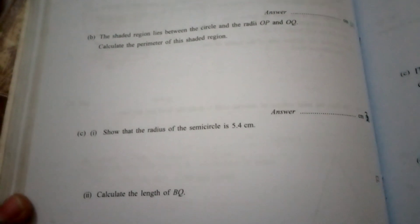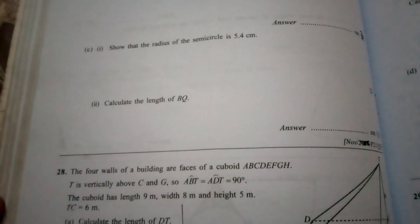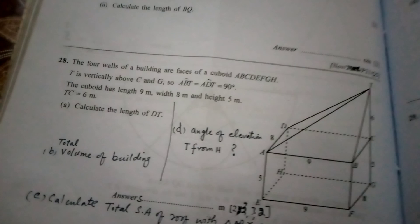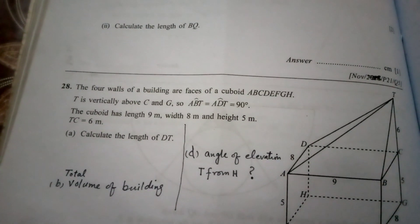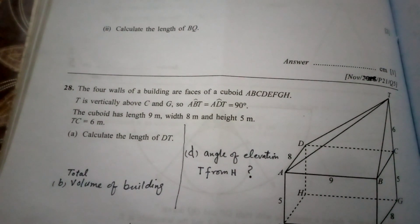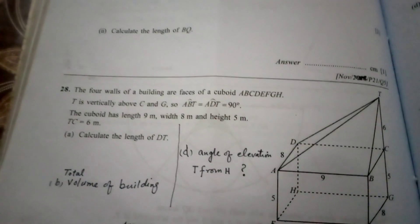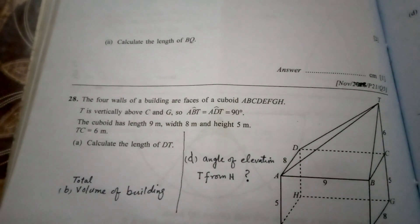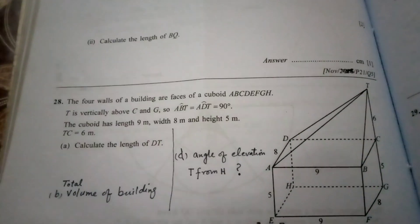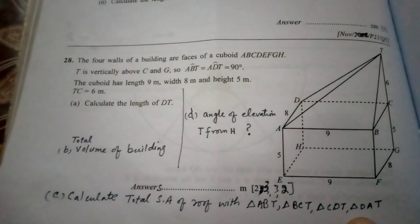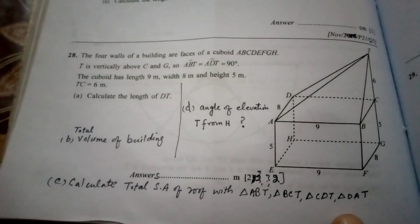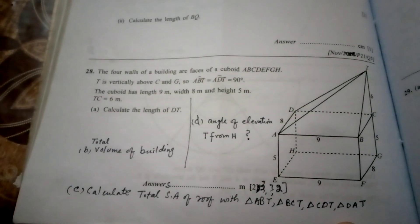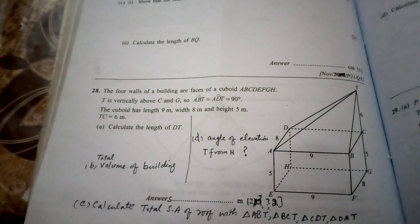The next question, number 28: the diagram shows a building where the four walls are faces of a cuboid. T is vertically above C and G, so angles ABT and ADT are equal to 90 degrees. The cuboid has length 9 meters, width 8 meters, and height 9.5 meters, and TC is equal to 6 meters. Pause the video and try to attempt all these questions by yourself.